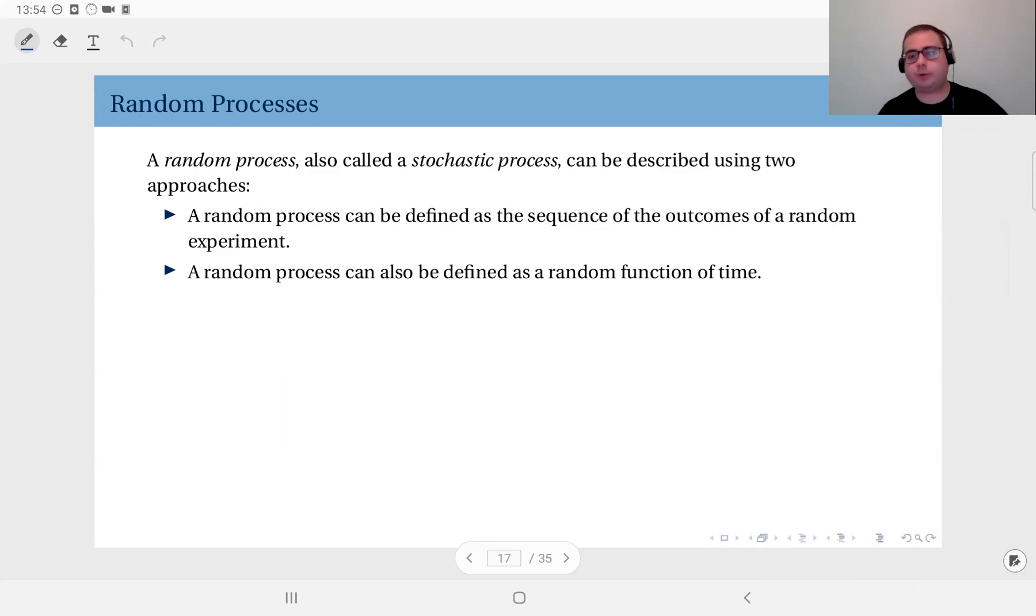A random process can be defined as the sequence of outcomes of a random experiment. The easiest way to visualize this is like you toss a coin repeatedly, and the outcomes, they are separate random variables, but also if you attach them to a time axis, this trial number one, trial number two, trial number three, etc. So you assign time indices to each trial, what you get is a discrete time random process. Or for instance, similarly, you throw a die repeatedly. That also describes a random process.